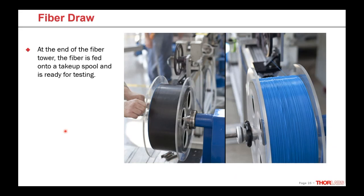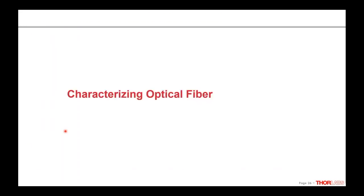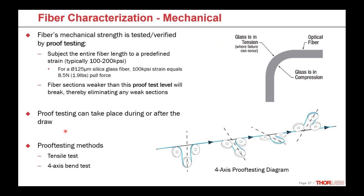That concludes the fiber draw portion of the talk. Now we'll spend a few minutes on how we test and characterize the fiber to make sure we've achieved what we set out to do. The first important way to characterize fiber is mechanical strength — it's really important that we achieved a pristine surface and didn't add any defects, so the fiber can be strong and flexible. This is verified by what's called proof testing: we subject every millimeter of the fiber along the entire length of the spool to a predefined strain for a predefined amount of time and verify the fiber can handle that tension.